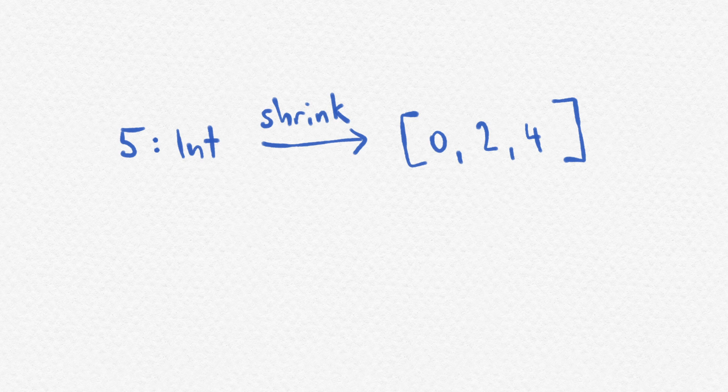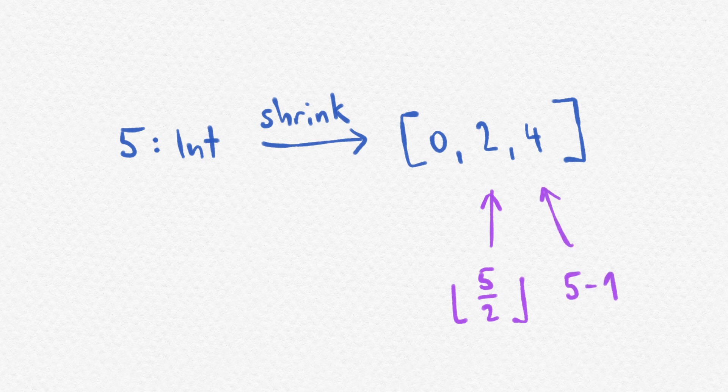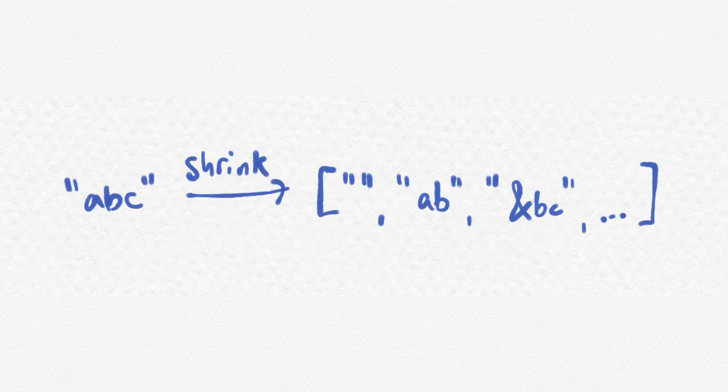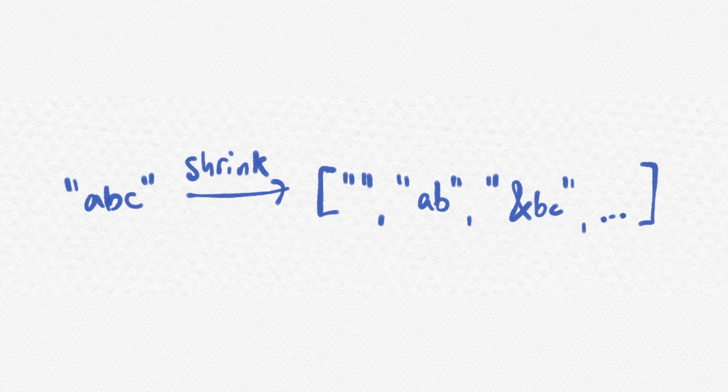So for example, an integer n might shrink to 0 straight away, or to n divided by 2, or n minus 1, etc. And similarly, strings might have their own function that generates smaller or simpler strings from the one you provide, booleans will shrink to false and so on.